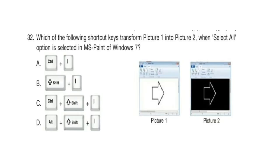Question 32. Which of the following shortcut keys transforms picture 1 into picture 2 when the select-all option is selected in MS Paint of Windows 7?